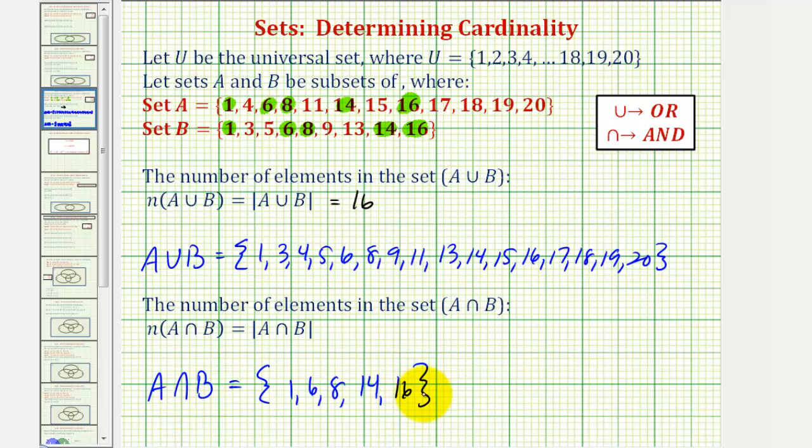Notice how this intersection contains one, two, three, four, five elements, and therefore the number of elements in A intersect B equals five.